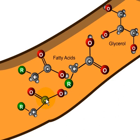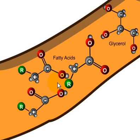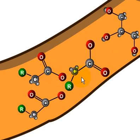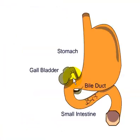Triglycerides consist of three fatty acids and one glycerol. To each carbon of the glycerol, one fatty acid was attached, and the lipase broke them down into one glycerol and three fatty acids.